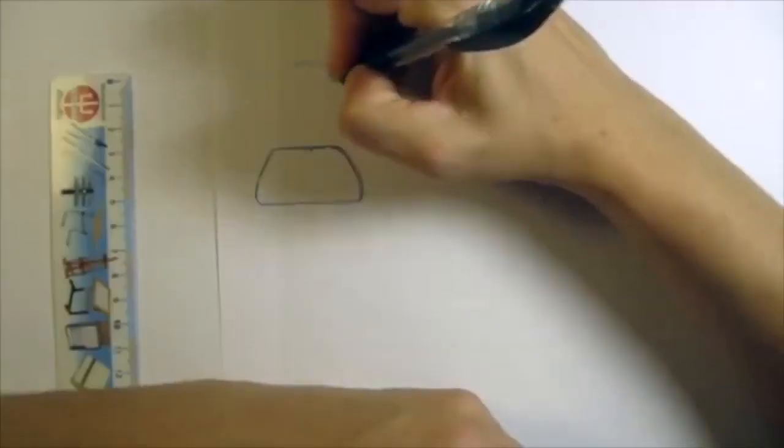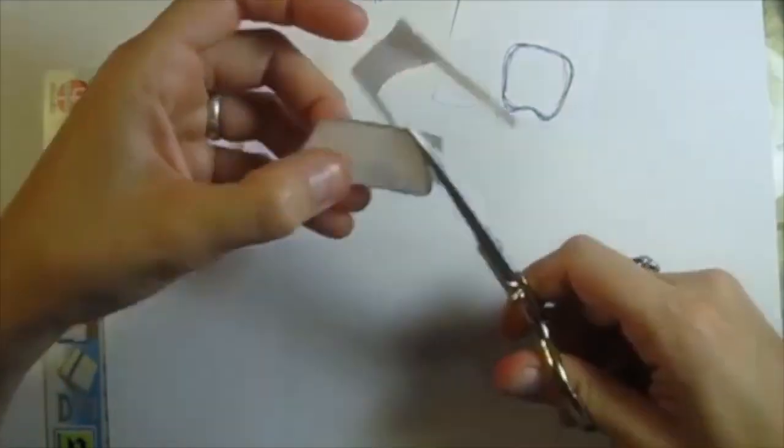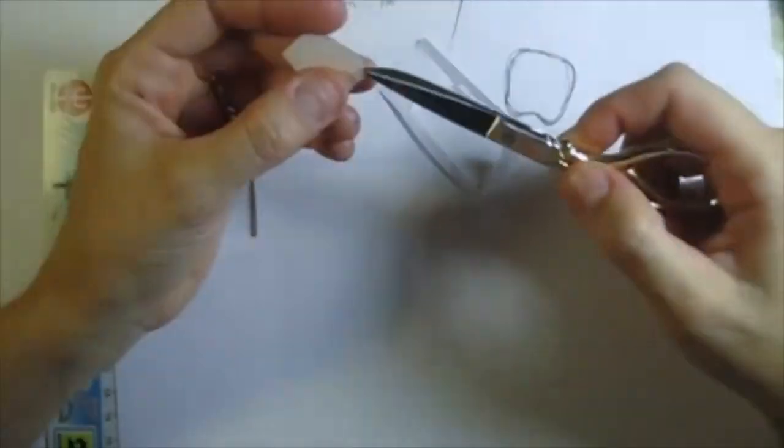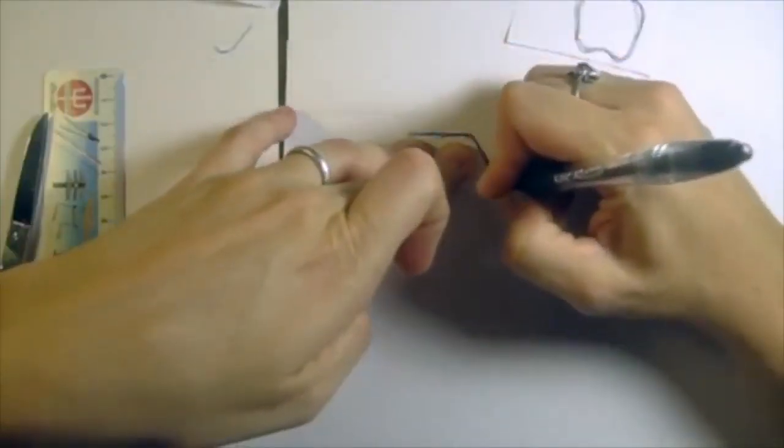Sketch the cushions, don't worry about making symmetrical measurements. Fold the paper and correct the symmetry. Now we have a perfect sketch!